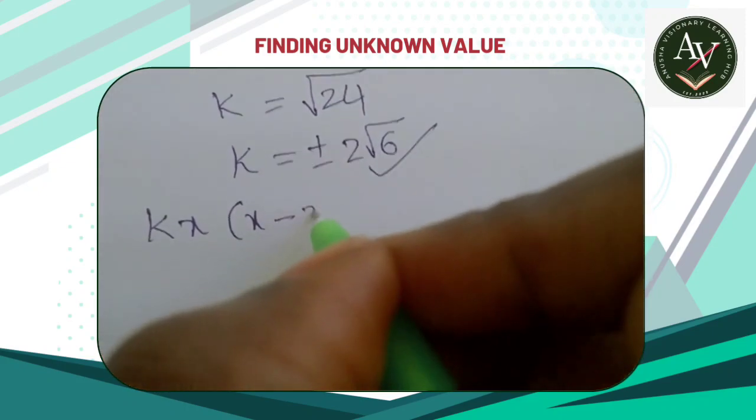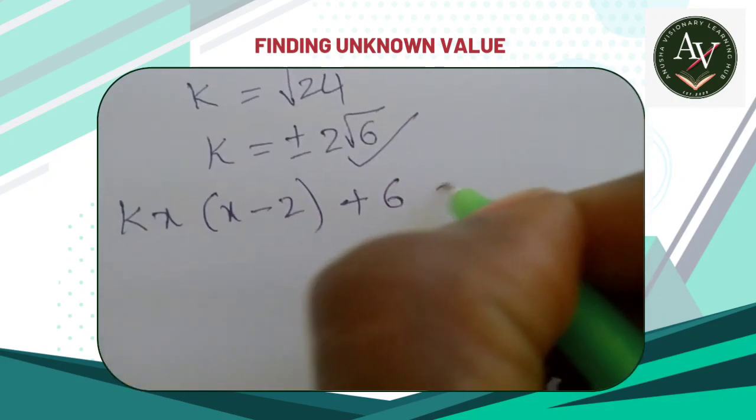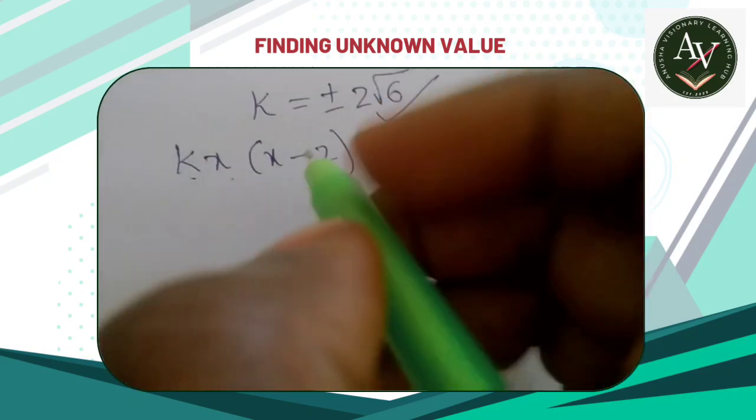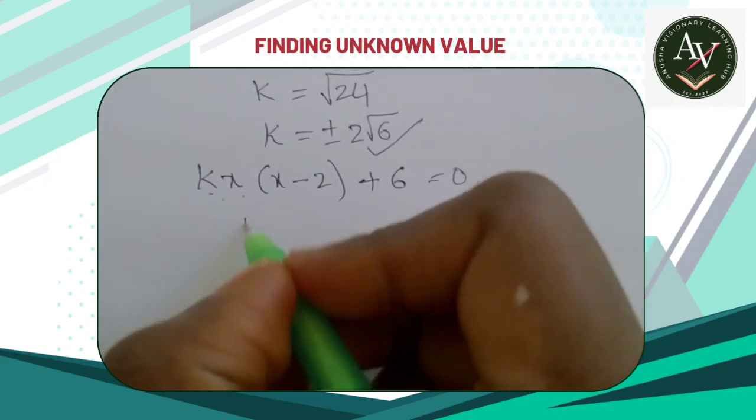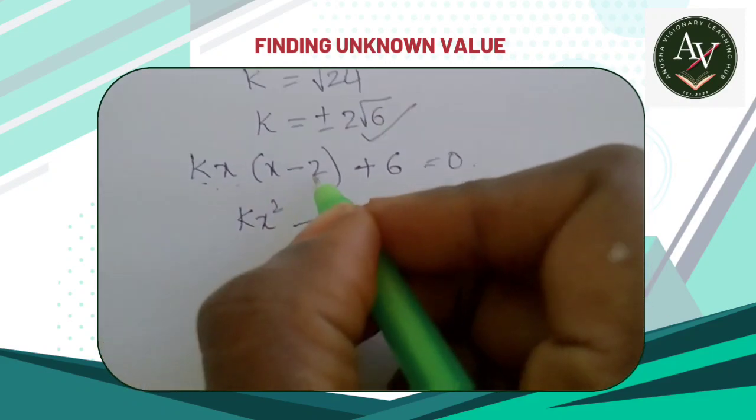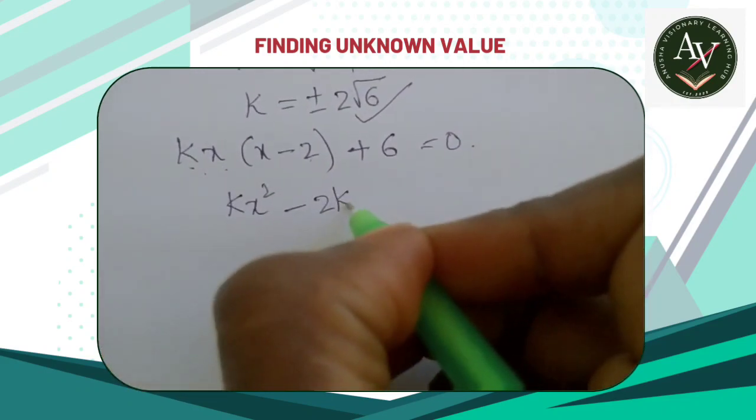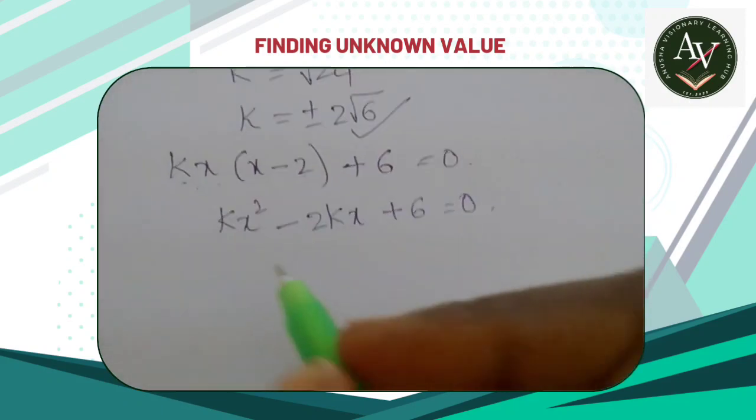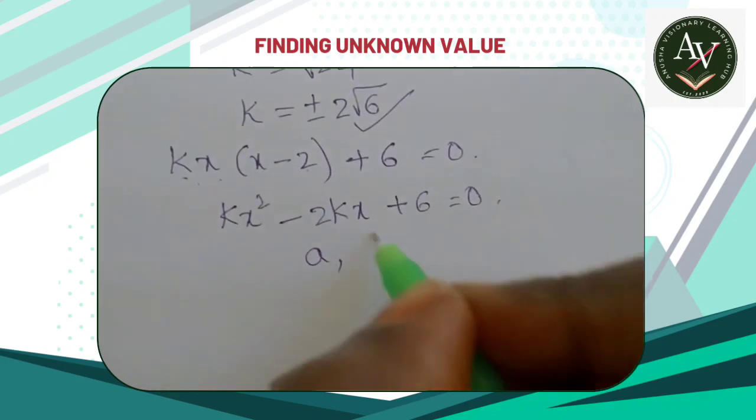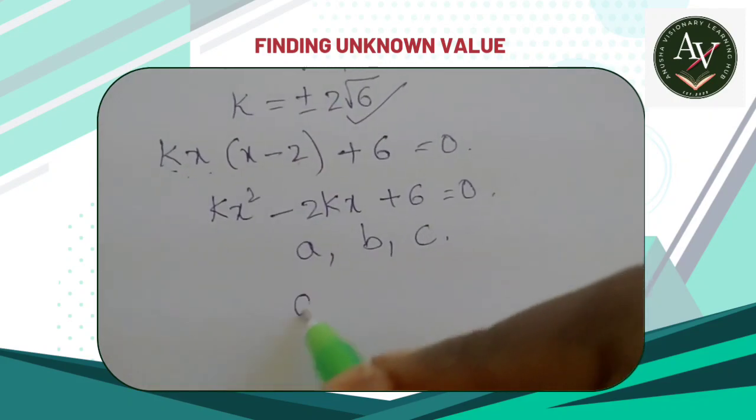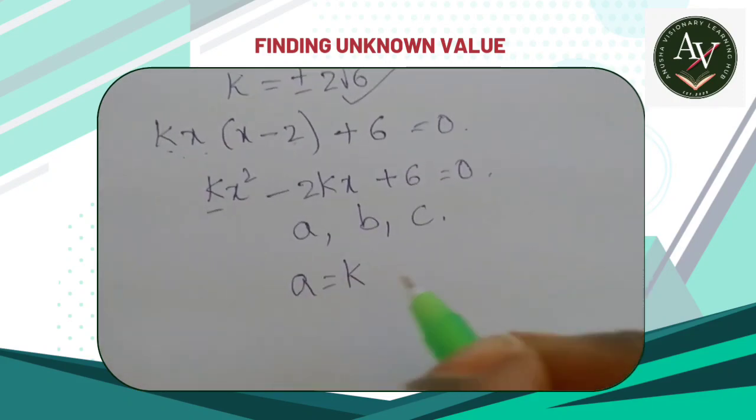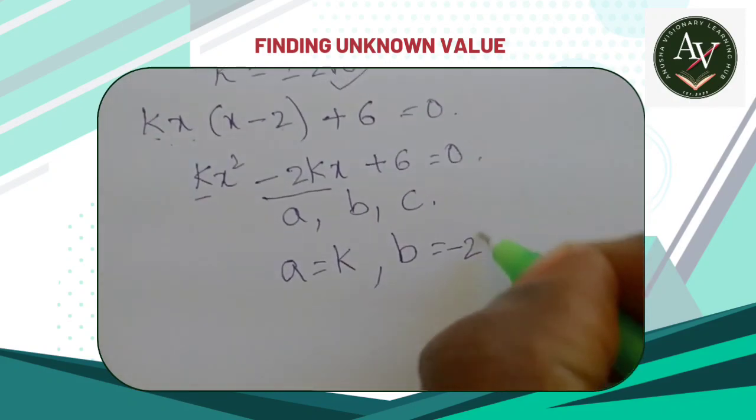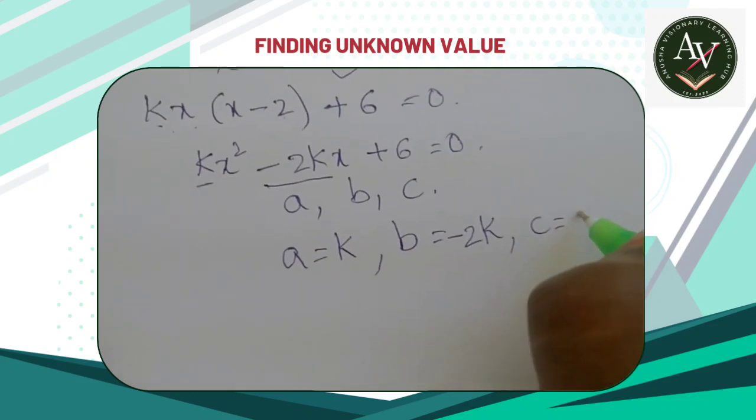kx into x minus 2 plus 6 equals zero. Now first multiply kx into x minus 2. Then it will be kx into x equals kx² minus 2 into kx equals minus 2kx plus 6 equals zero. Now just identify the values of a, b, c. Where a equals coefficient of x² that is k, and b equals coefficient of x that is minus 2k, and c equals 6.